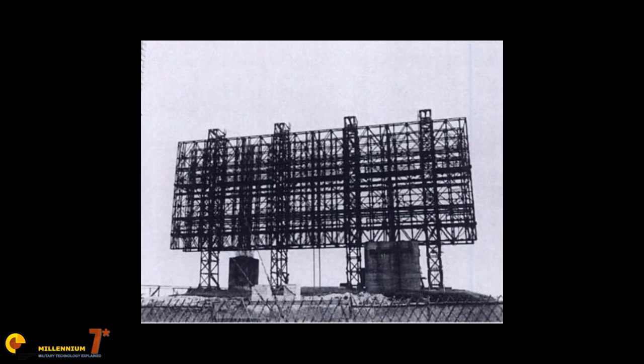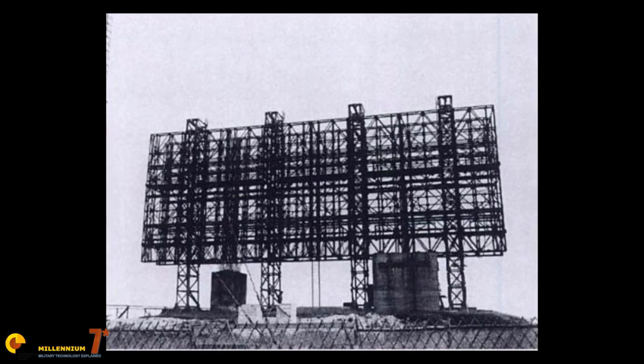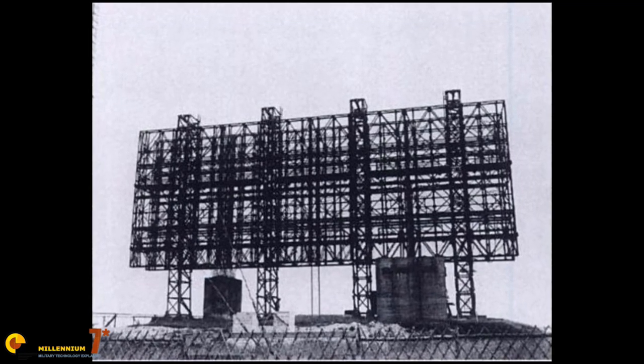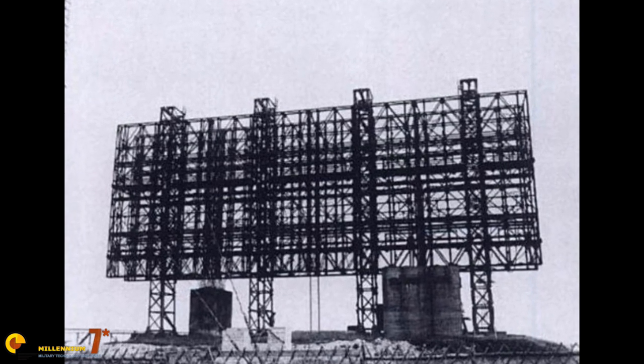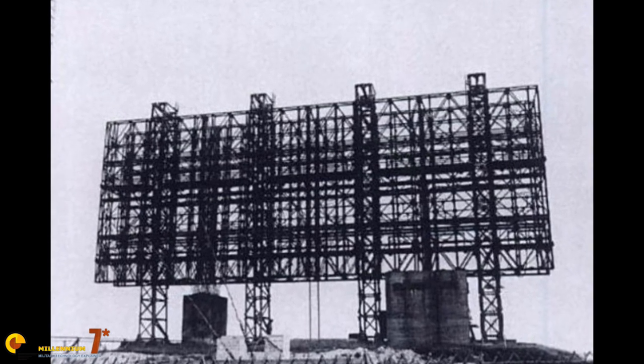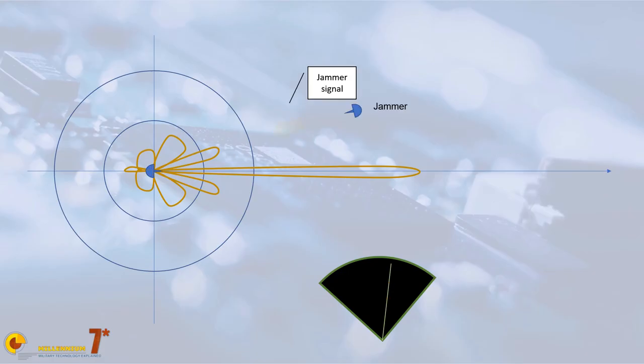The second problem is that the energy that is going through the side lobes is actually wasted, is not really useful, can produce this kind of false echoes, so the smaller they are, the better is the antenna efficiency.